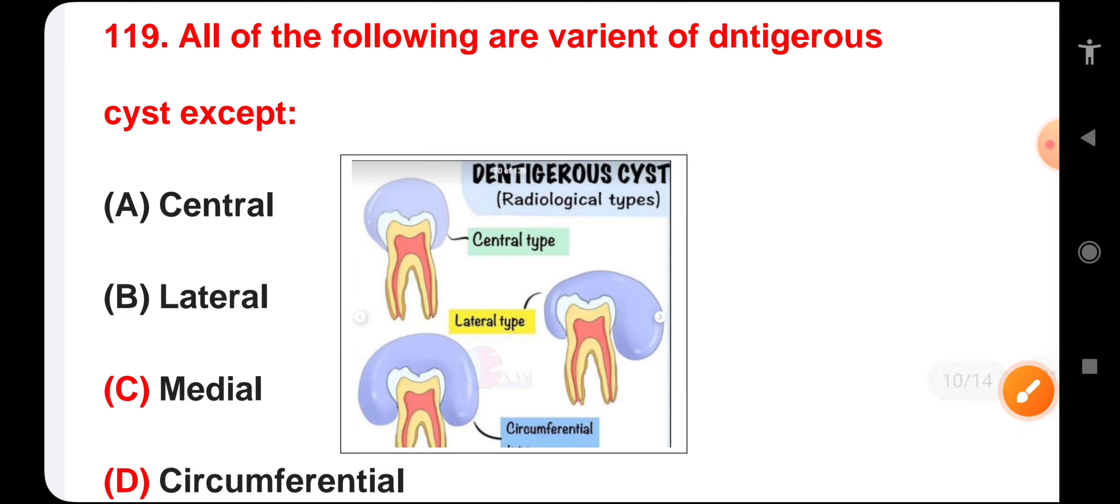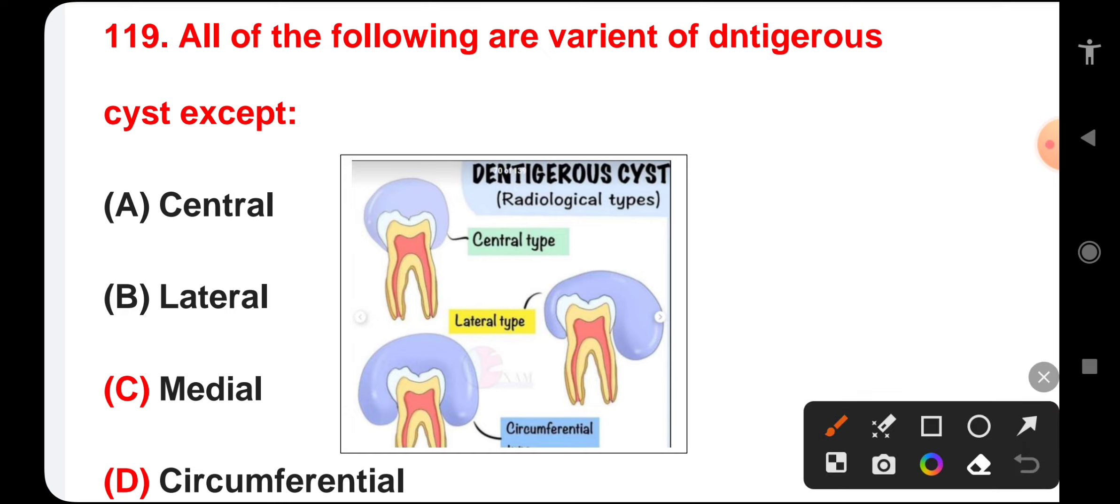All of the following are variants of dentigerous cyst except central, lateral, medial, or circumferential. Dentigerous cyst has three variants: central, lateral, and circumferential. The only one that is not an option is medial. The correct answer is medial.